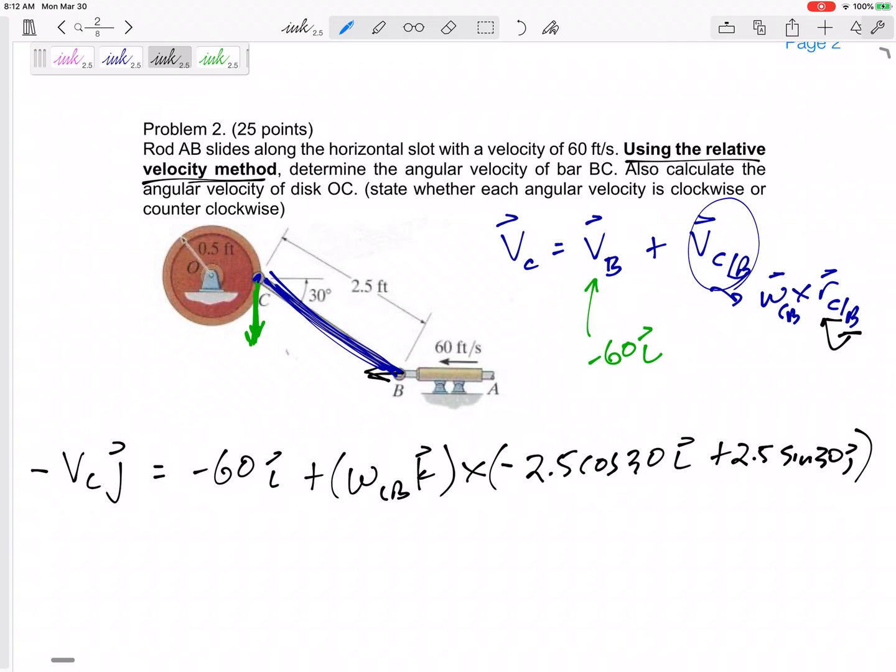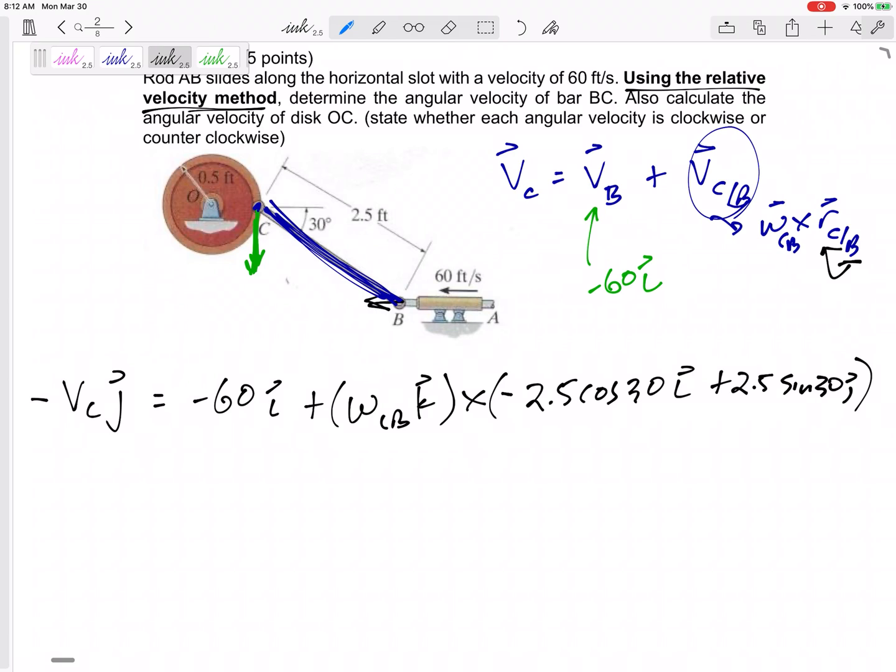So, there's my equation right there. And it is okay that I have two unknowns. In fact, probably a good sign that I have two unknowns, magnitude of VC and the angular velocity of CB. And I have two equations, my I equation and my J equation.